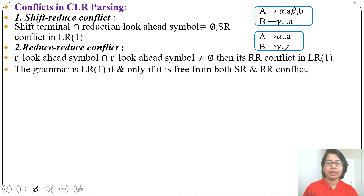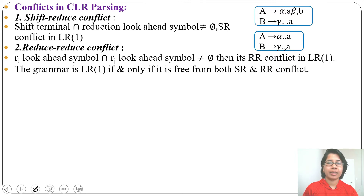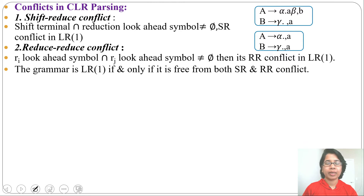A grammar is LR1 or CLR1 if and only if it is free from both shift-reduce and reduce-reduce conflicts. In the previous lecture, I discussed an example with the LR1 automata and LR1 parsing table — if the parsing table is free from multiple entries, the grammar is LR1. Now, rather than creating the full parsing table, we will identify from the partial LR1 automata whether a conflict is present or not.